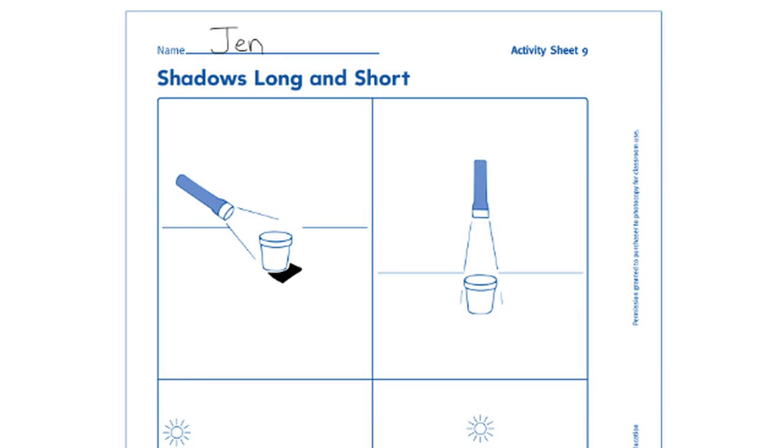Then allow the individual teams the opportunity to show the class how they made the long and short shadows. Next, turn on the lights, give each student a copy of Activity Sheet 9, and tell the students to draw in the shadow that the flashlight would make in the two pictures at the top of the page.